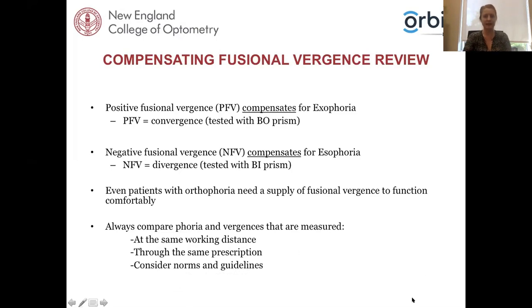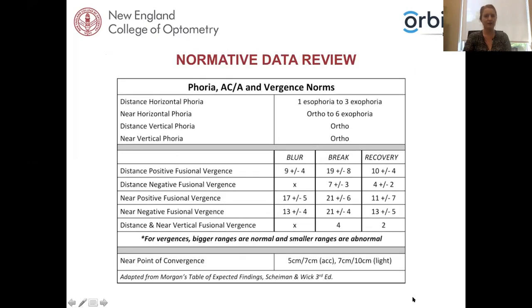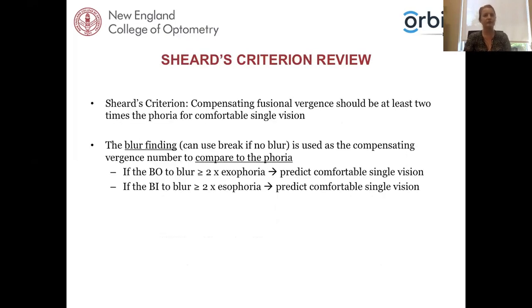Reviewing normative data adapted from Scheiman and Wick — a useful chart to have in clinic. Sheard's criterion states that compensating fusional vergences should be at least twice the phoria for comfortable single vision. We use the blur finding, or break if there's no blur, and compare vergence findings to the phoria. For example, if the base-out blur is at least twice the exophoria, we predict comfortable single vision; the same principle applies in reverse for esophoria.